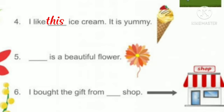Fifth sentence. Dash is a beautiful flower. The flower is near. So, we use this. This is a beautiful flower.